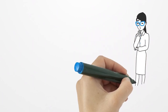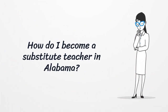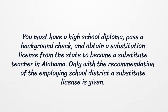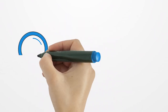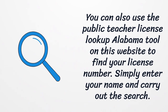How do I become a substitute teacher? In Alabama, you must have a high school diploma, pass a background check, and obtain a substitution license from the state. Only with the recommendation of the employing school district is a substitute license given. You can also use the Public Teacher License Lookup Alabama tool on this website to find your license number — simply enter your name and carry out the search.